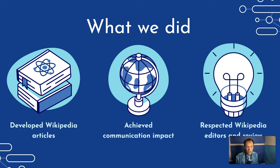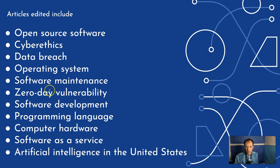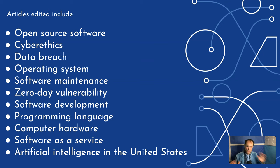In the course of doing this, we had to respect Wikipedia editors and review. This is different from volunteers coming to Wikipedia because we're paying some people to do this. We did documentation, followed a lot of rules, asked for a lot of permission — this happened continually throughout the project. Some of the articles we edited include open source software, data breach, software maintenance, and artificial intelligence in the United States. There's a list of them on the project page.